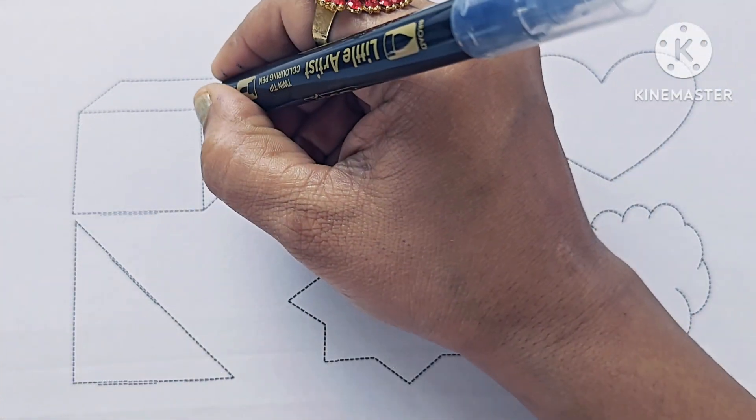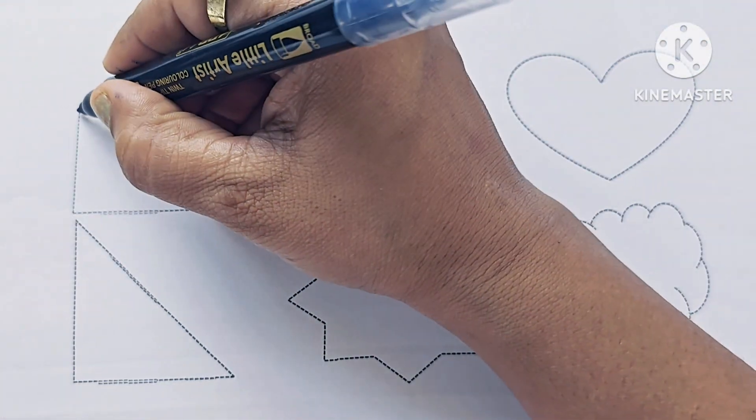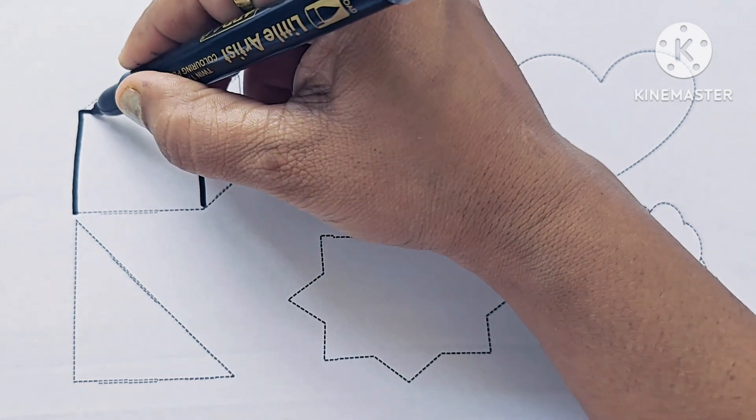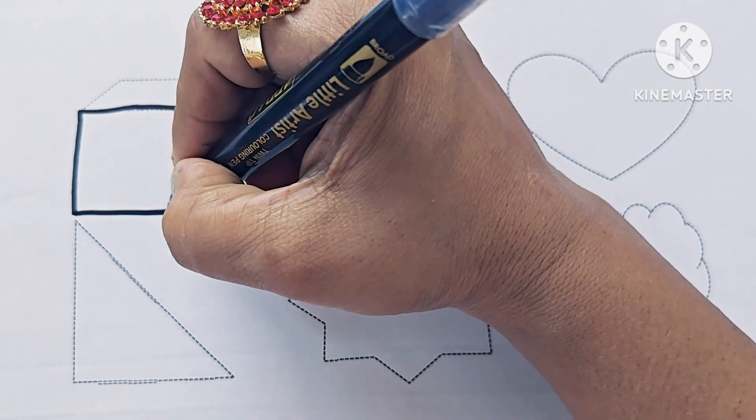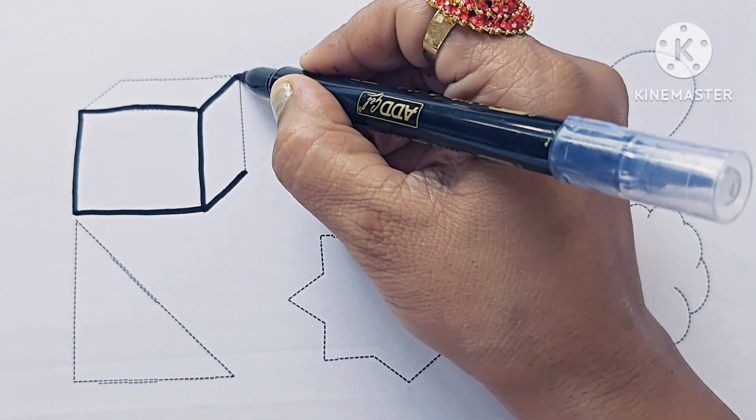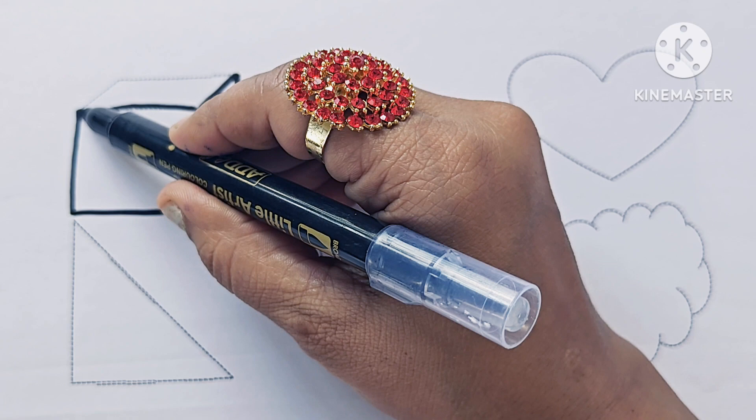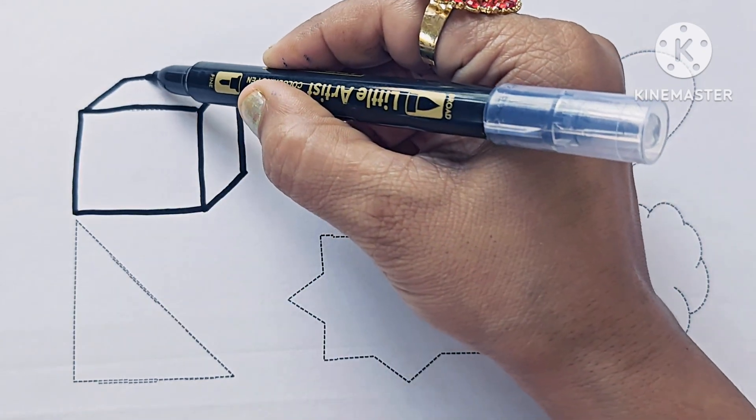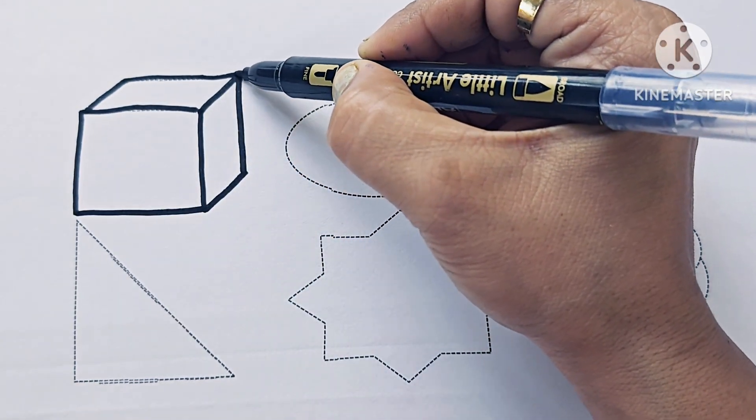This is Cube. It is a 3D shape. It has length, width and height. Cube. Rice looks like Cube.